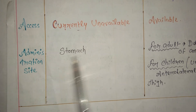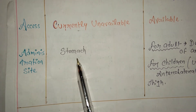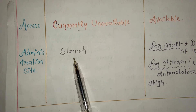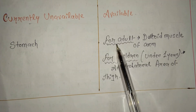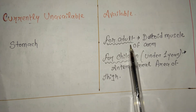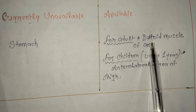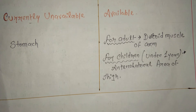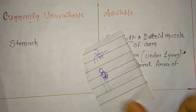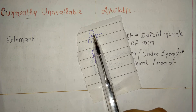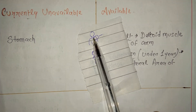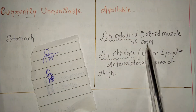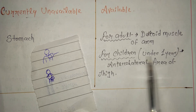Next point is administration site — where we inject the vaccine. The neural vaccine was injected into the stomach, which was very painful, and so it has been discontinued. For the non-neural vaccine, for adults, the administration site is the deltoid muscle of the arm — the upper shoulder portion.